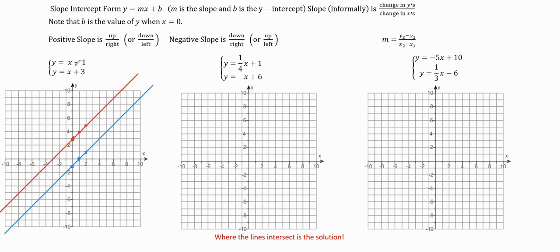You can tell that these lines are parallel, which you should have known because the slopes are both the same. And since they have different y-intercepts, there's no solution here. These lines will never cross each other, so this system has no solution.